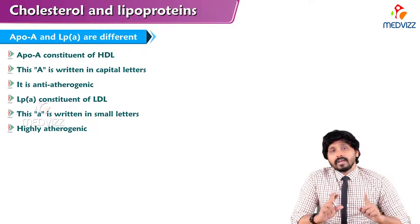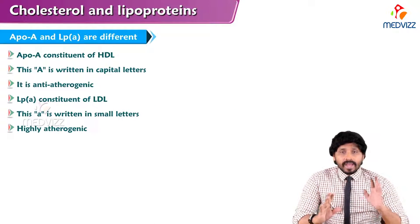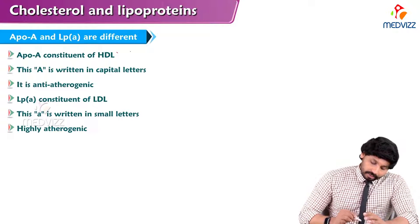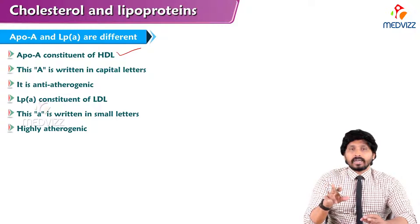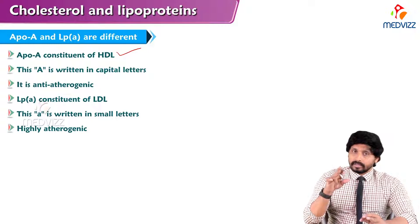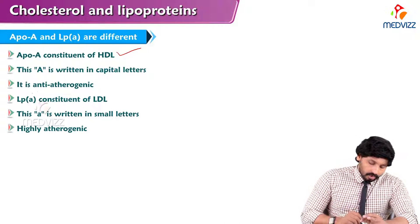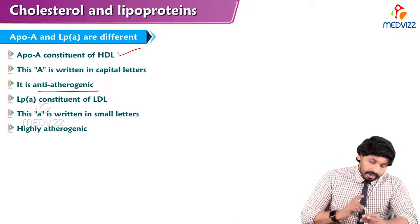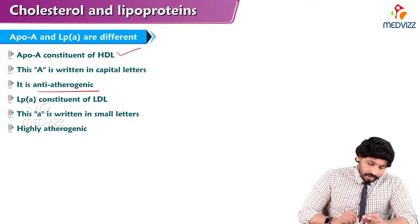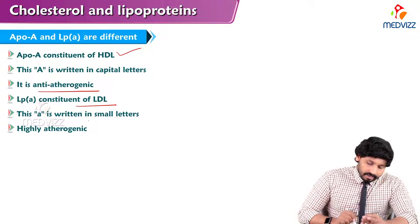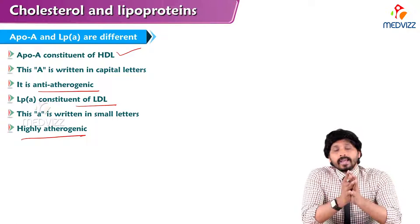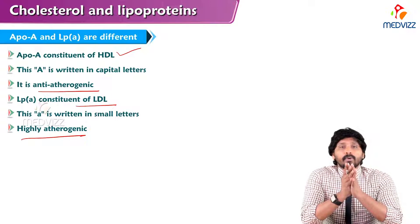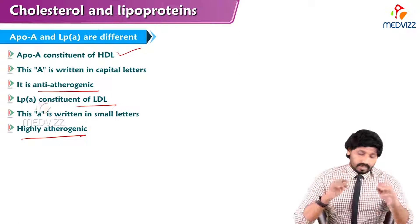Remember: ApoA and lipoprotein(a) are different. ApoA is a constituent of HDL — it is good, and the A is written in capital letters. ApoA is always written in capital letters and is anti-atherogenic. Lipoprotein(a), written with a lowercase 'a', is a constituent of LDL and is highly atherogenic. ApoA is anti-atherogenic; Lp(a) is highly atherogenic.